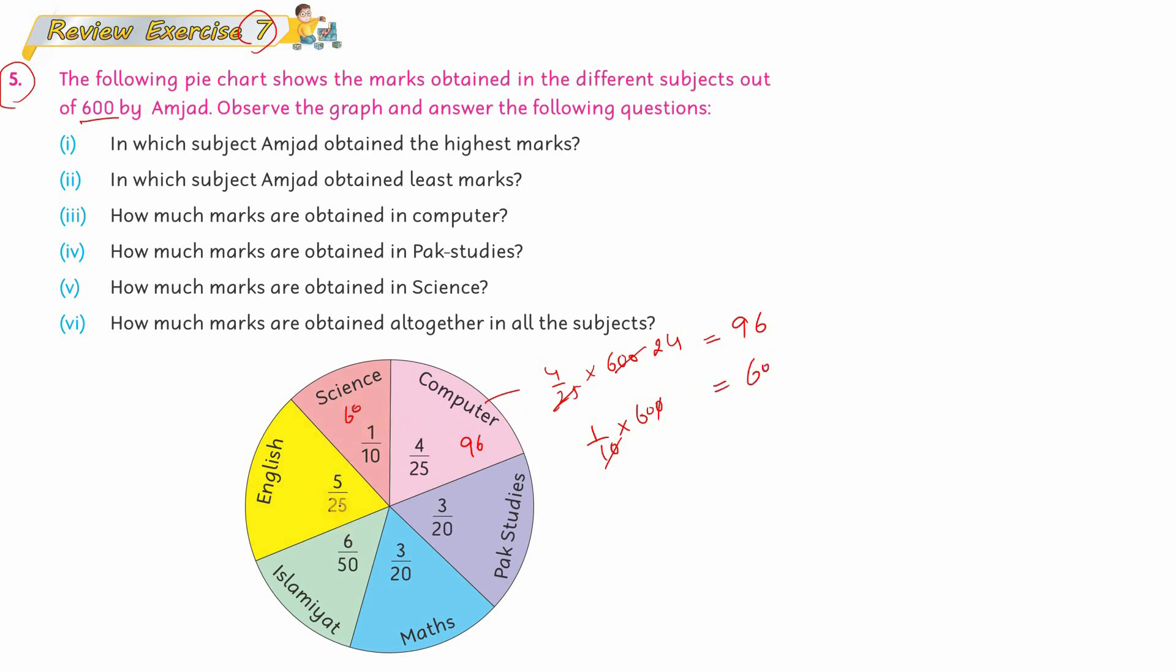Similarly, for English it is 5 by 25 multiplied by 600. The 25 cancels with 600 to give 24, then 24 multiplied by 5 gives us 120. After this, you need to calculate for Islamiat.